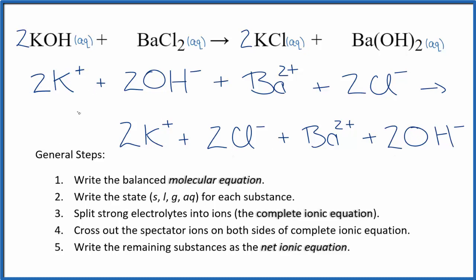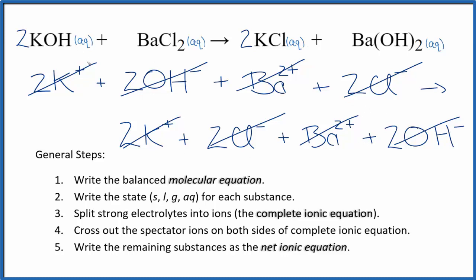If we cross out the spectator ions, we have two potassium ions in the reactants and products, two hydroxide ions, a barium ion on each side, and two chlorides on each side. There's nothing left. Because everything's soluble and aqueous, we have the same thing we start and finish with — so there's no reaction. This is Dr. B with the balanced net ionic equation for KOH plus BaCl₂, except there's no reaction. Thanks for watching.